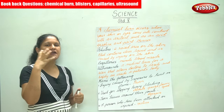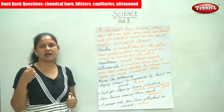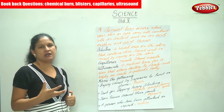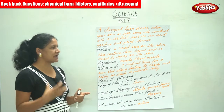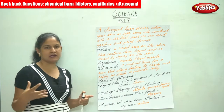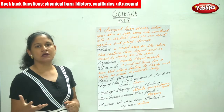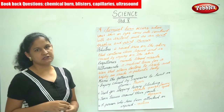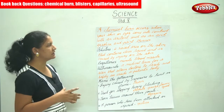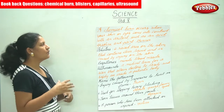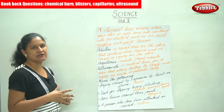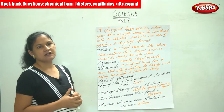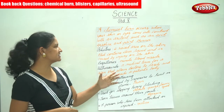A chemical irritant irritates the skin or the eyes. People working in labs come in contact with acid, paint thinner, etc., and may be susceptible to chemical burns.